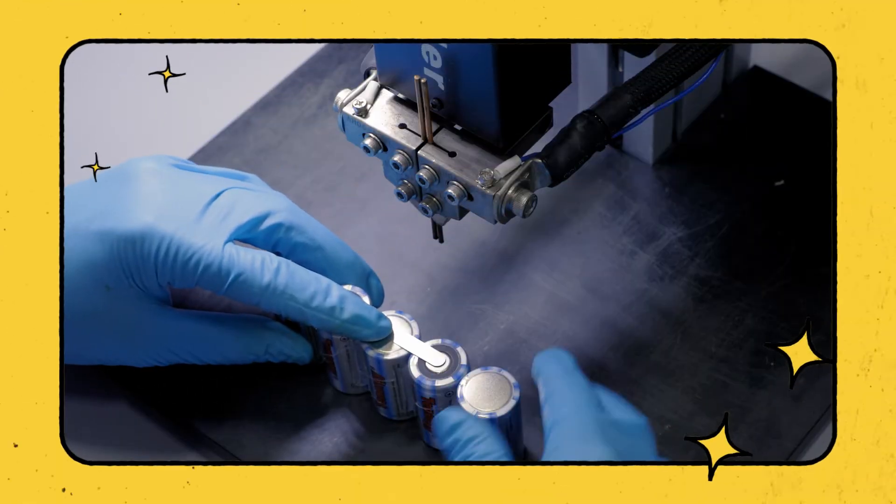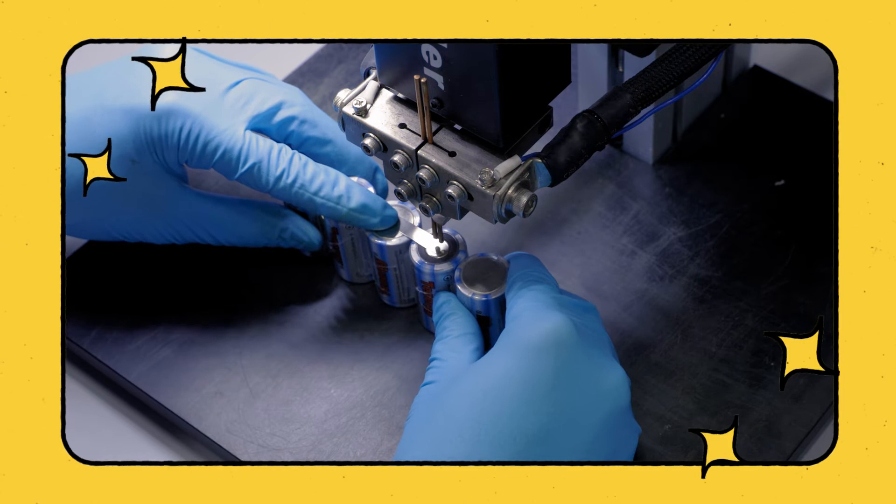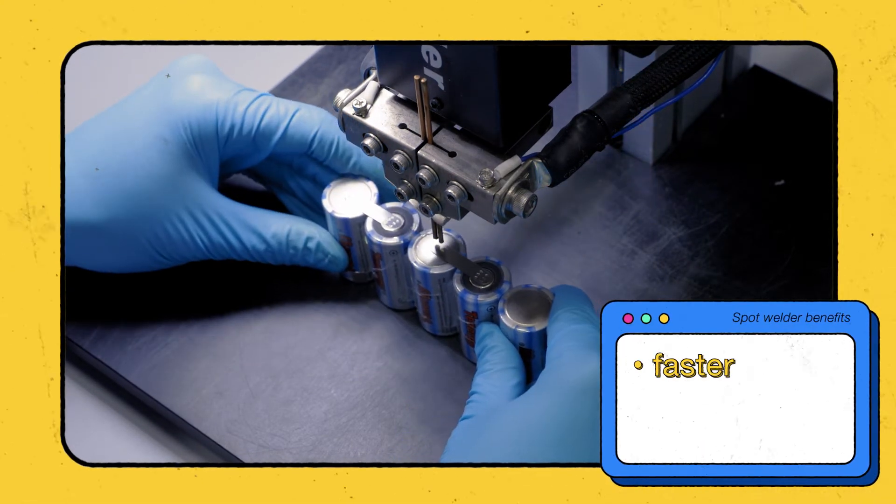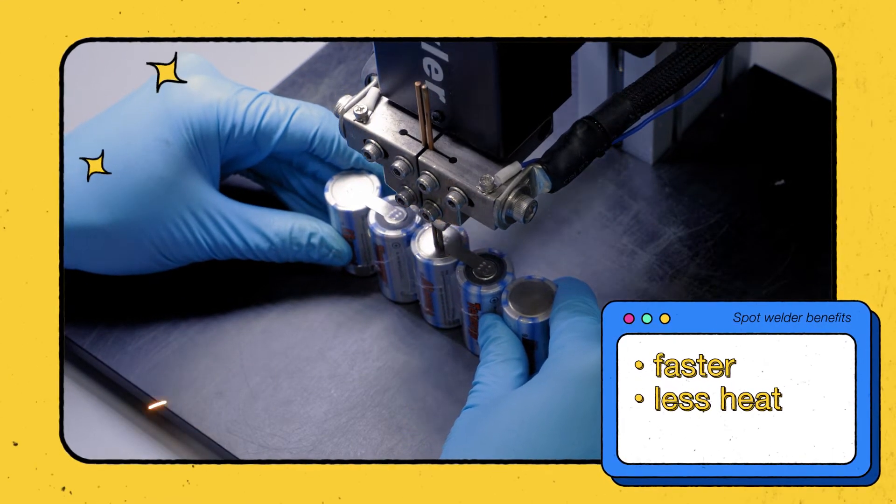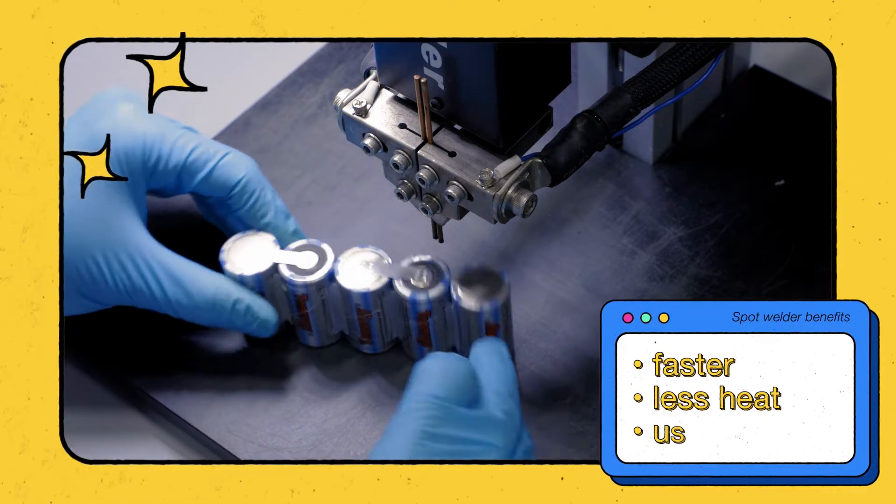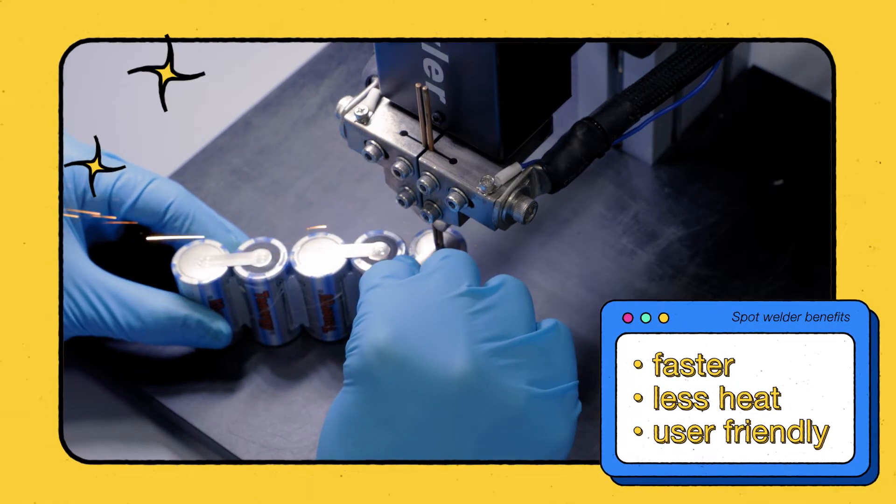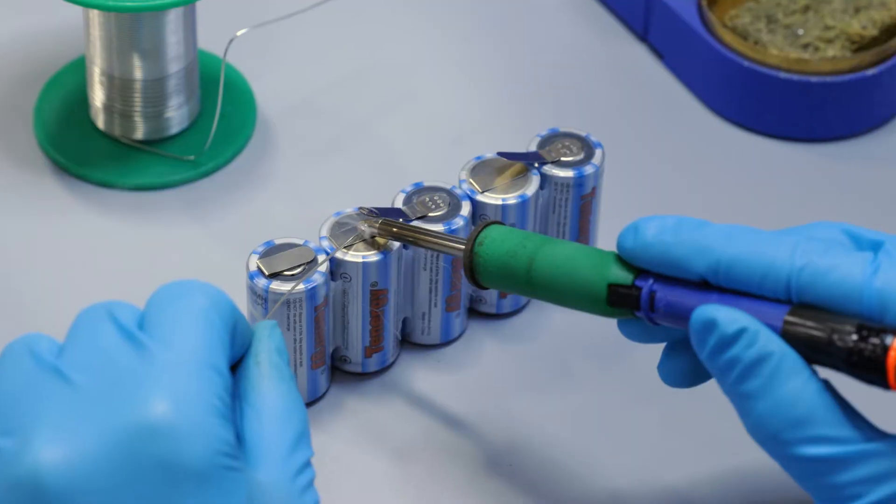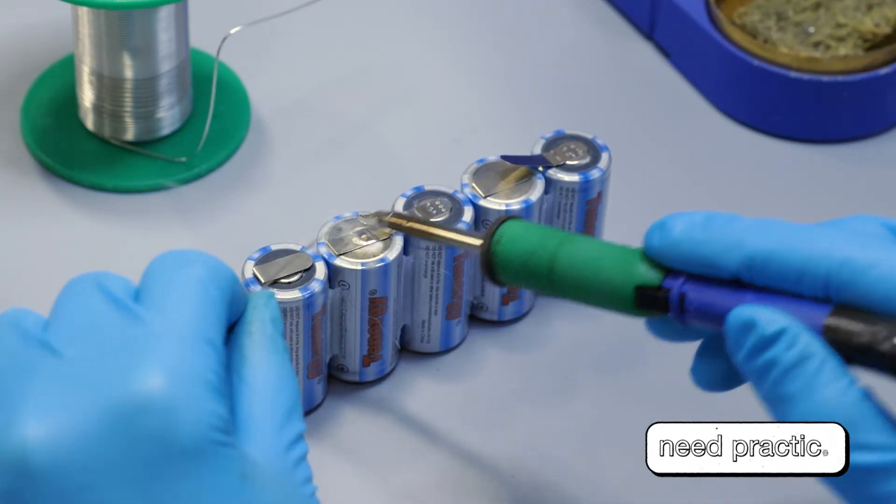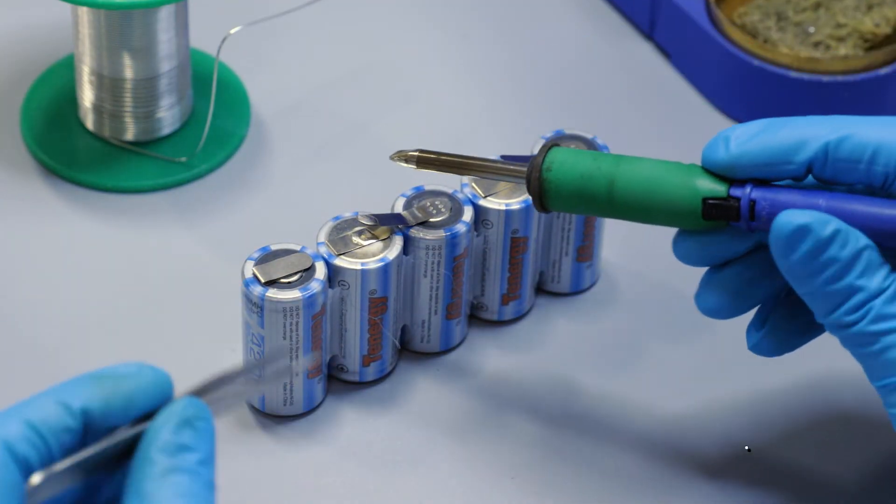However, the spot welding method is still quite common because of its efficiency. It can connect the cells together faster without adding a lot of heat compared to soldering. Also, users don't need much experience to use a spot welder. The soldering method requires a lot more practice to prevent overheating and damaging the cells during the process.